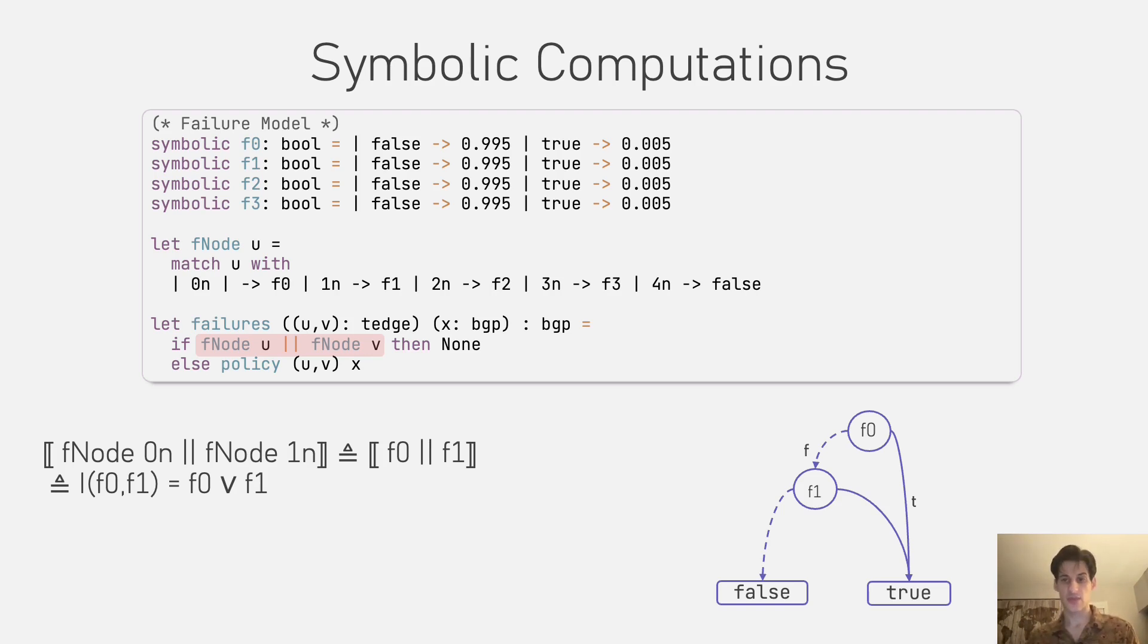Otherwise, if it is false, then we will look at F1, and if that is true, then again, this leads to the true leaf. Otherwise, this combination does not belong to the set, so it leads to the false leaf.